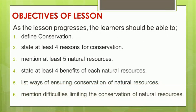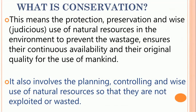Objectives of the lesson. As the lesson progresses, the learners should be able to: 1. Define conservation of natural resources. 2. State at least 4 reasons for conservation of natural resources. 3. Mention at least 5 natural resources in the environment. 4. State at least 4 benefits of each natural resource. 5. List ways of ensuring conservation of natural resources. 6. Mention difficulties limiting the conservation of natural resources.